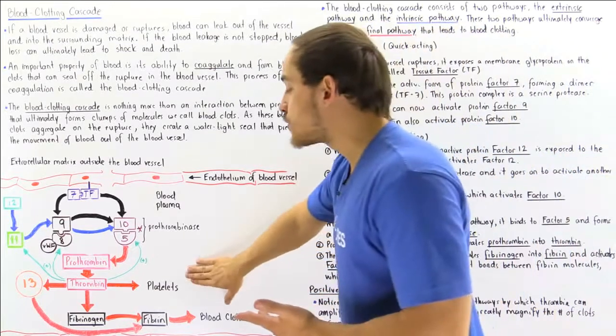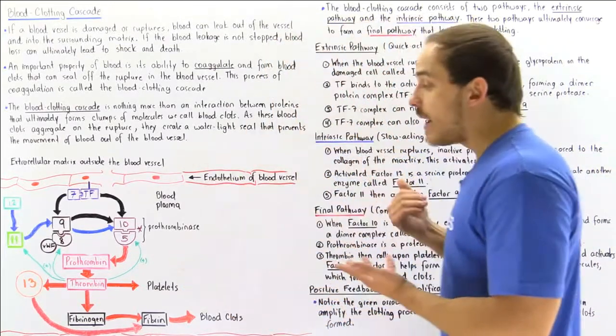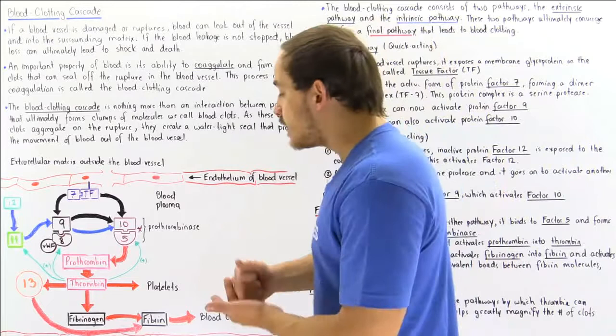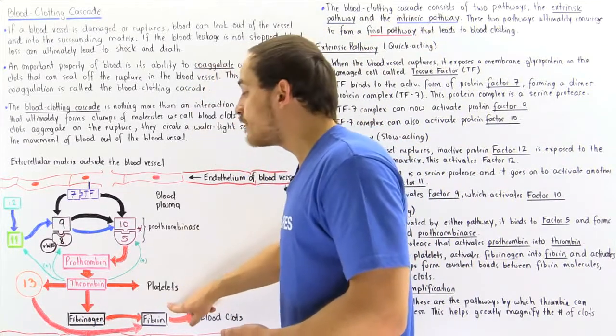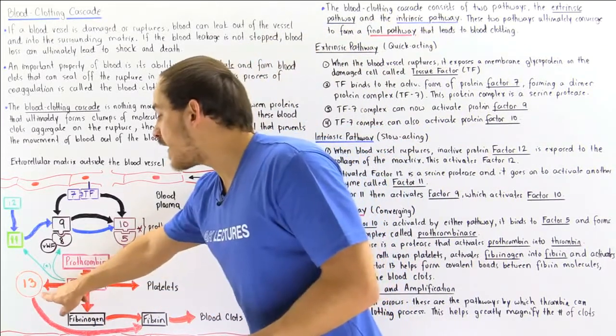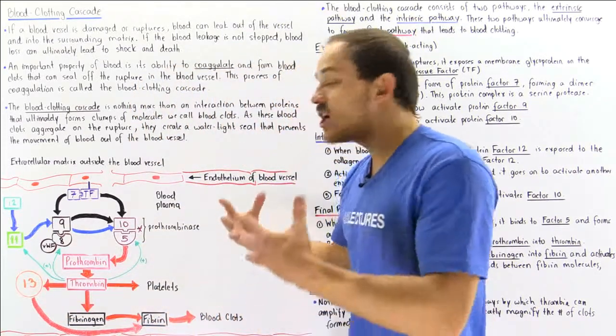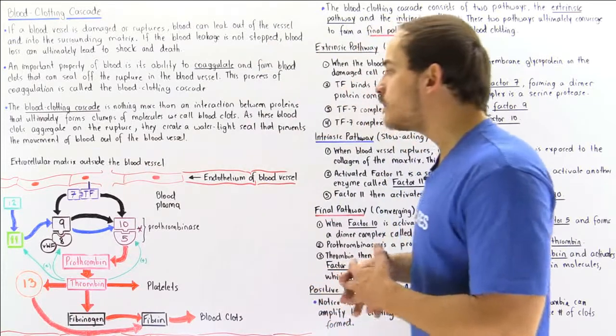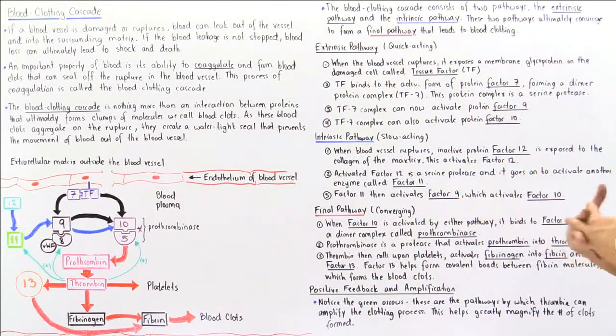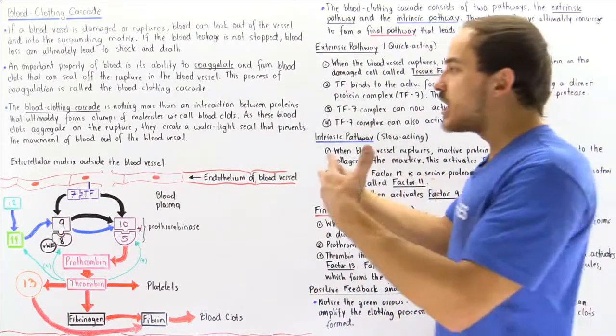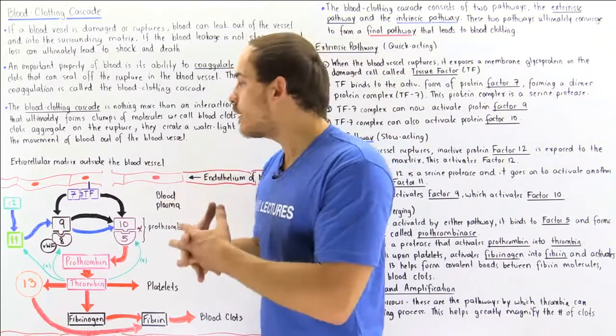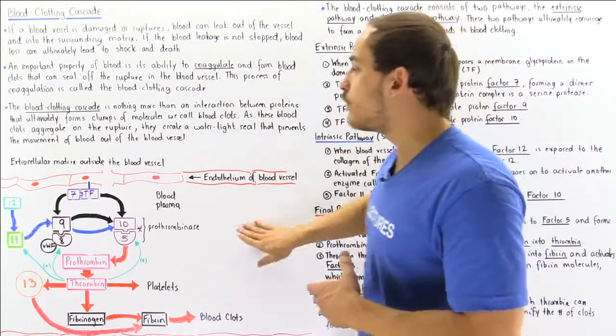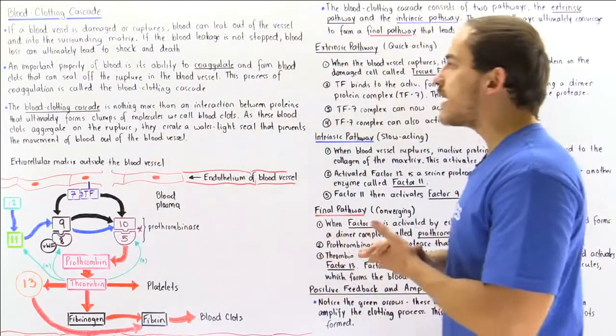So thrombin does three things. It activates our platelets, it calls upon these platelets, it activates fibrinogen into fibrin, and it activates factor 13 that is needed to basically covalently bond these fibrin along that rupture to form that mesh-like network of proteins that seals off that rupture and prevents the movement of blood out of that blood vessel.